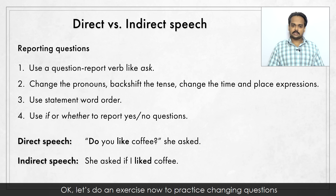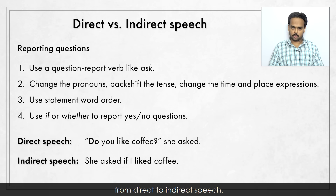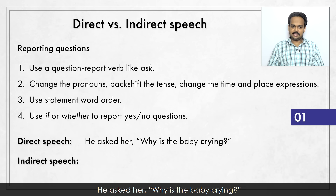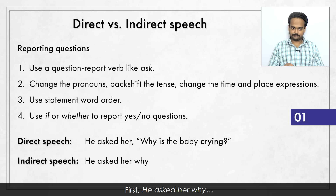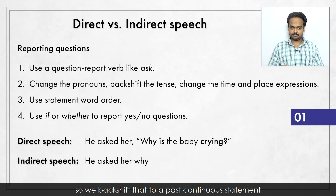Let's do an exercise now to practice changing questions from direct to indirect speech. We will go through nine sentences. Here's the first one: He asked her, "Why is the baby crying?" First, "he asked her, why?" Now we need to convert the question into a statement form. It's in the present continuous tense, so we backshift that to a past continuous statement. So: he asked her why the baby was crying. "The baby was crying" is a past continuous tense statement.